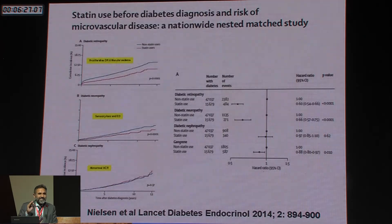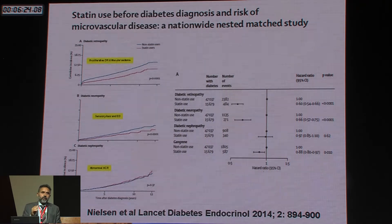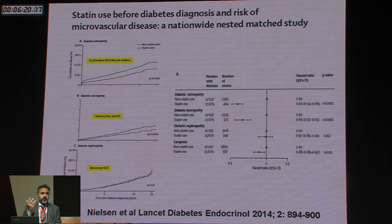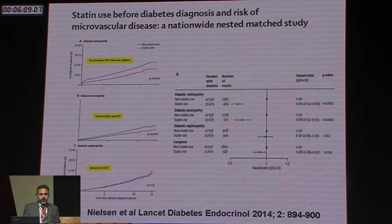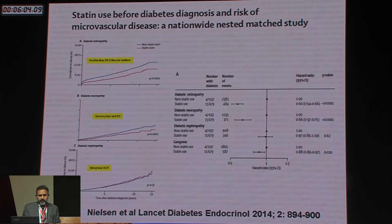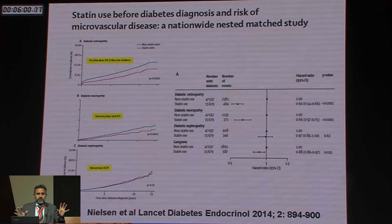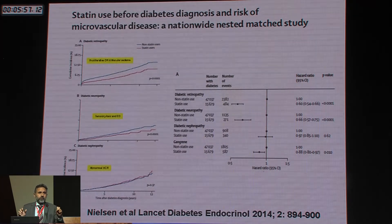Data from a large population-based study in Scandinavian countries shows that statins can prevent the development of microvascular complications — particularly retinopathy and neuropathy with amputations — though without a significant impact on nephropathy. So statin use has a benefit for retinopathy and neuropathy.